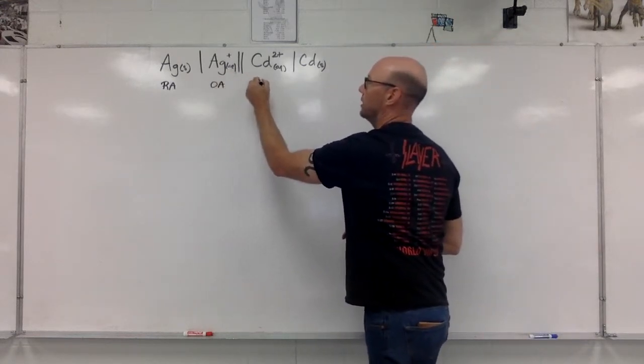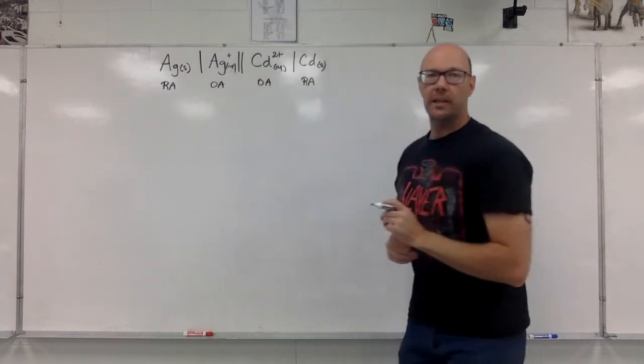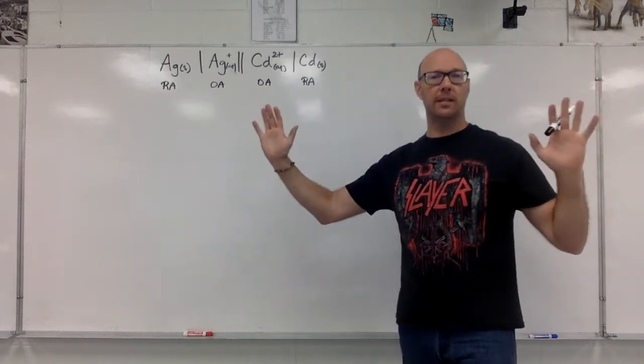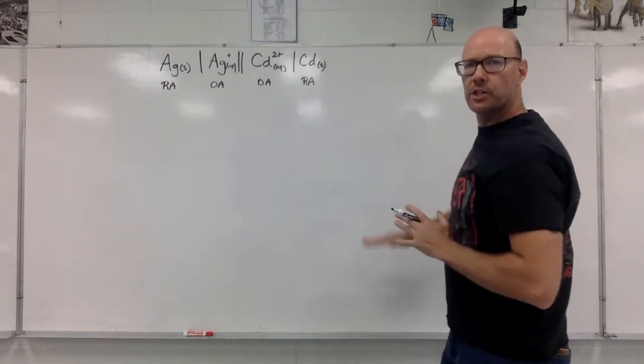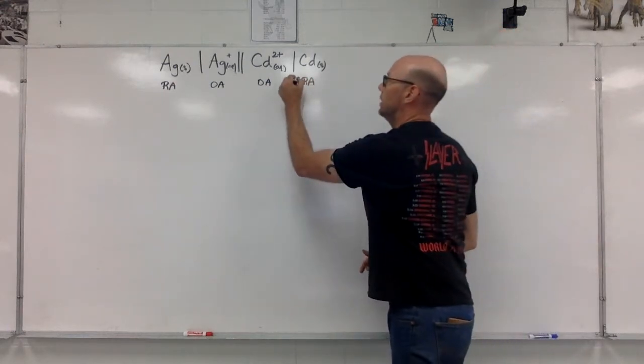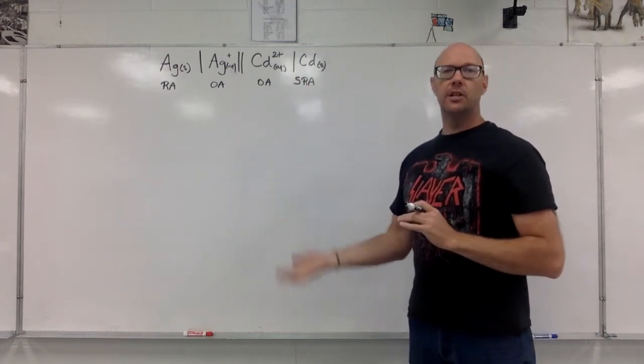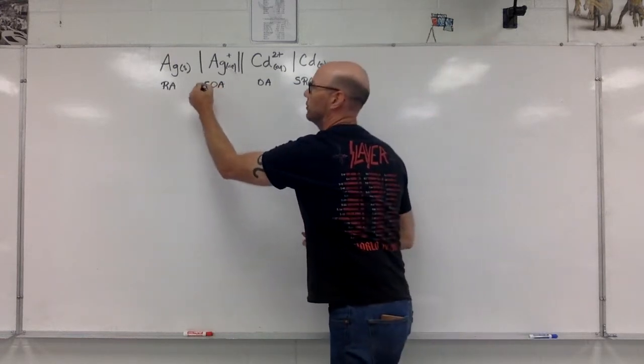oxidizing agent here, silver ions, cadmium ions, and a reducing agent for the cadmium solid. It is a good rule of thumb that we're going to have our two reducing agents on the outside. Out of the two reducing agents, the one that's lower down on the table is the strongest one. Here, it's the cadmium. Out of the two oxidizing agents, the one that's higher up is going to be the stronger one. It's the silver.